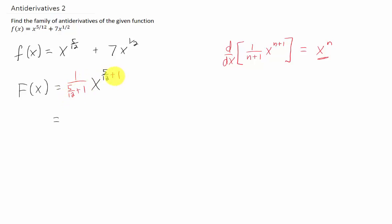Well you can find a common denominator here. 5 twelfths plus 1 is just 17 twelfths. So we have 1 over 17 twelfths x to the 17 twelfths as the antiderivative of just this first term here. We can simplify that a little bit further, get 12 seventeenths x to the 17 twelfths.